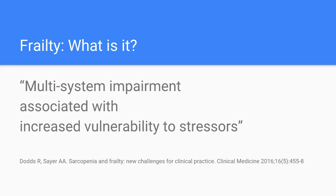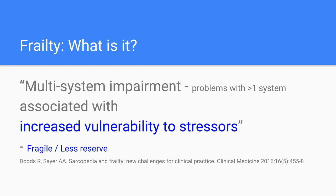Let's break it down a little. Multi-system impairment — what's that saying? It's simply saying problems with more than one system. It doesn't necessarily mean any one system's completely broken, just more than one isn't perfect. If you look at the basic epidemiology of ageing, we can clearly see the number of major conditions that people have increases with age, and that people are living longer with more problems. If you stress or strain, damage or impair these systems, things are more likely to go wrong. These systems are fragile.